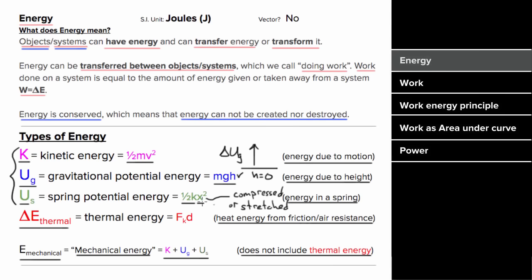Thermal energy is the heat energy generated by dissipative forces like friction and air resistance. You can find the amount of thermal energy generated by taking the size of the dissipative force times the distance through which that force was acting. The unit of energy is joules, and energy is not a vector.